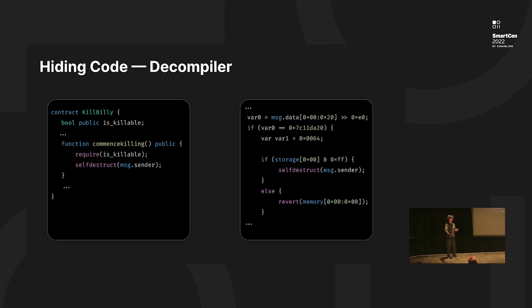We can easily understand what's in the decompiler. The if-condition denotes the function call, and var0 is the function signature for command scaling. The if-else condition denotes the require statement, and storage 0 is the scalable Boolean value. It's fairly easy to understand what's happening solely by looking at the decompiler's output.